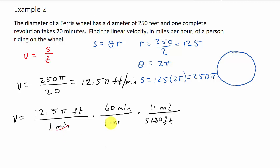So now the minutes cancel, the feet cancel, and now look, I'm left with miles per hour. And so if we multiply all this out, and we'll have to plug this into our calculator. So I'll do 12.5 times pi times 60, and then divide that by 5,280.